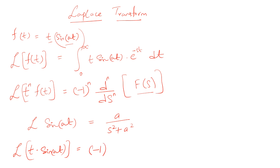Since the power of t is 1, we use n = 1. So this becomes (−1)^1 multiplied by the first derivative of a/(s² + a²). Now we take the derivative of this expression with respect to s.